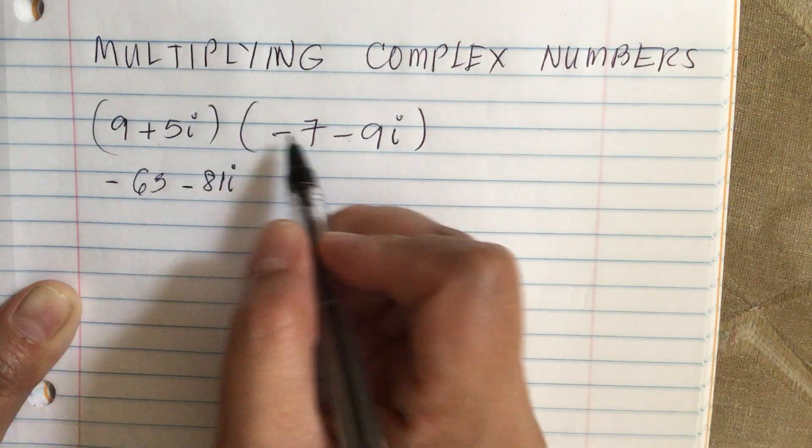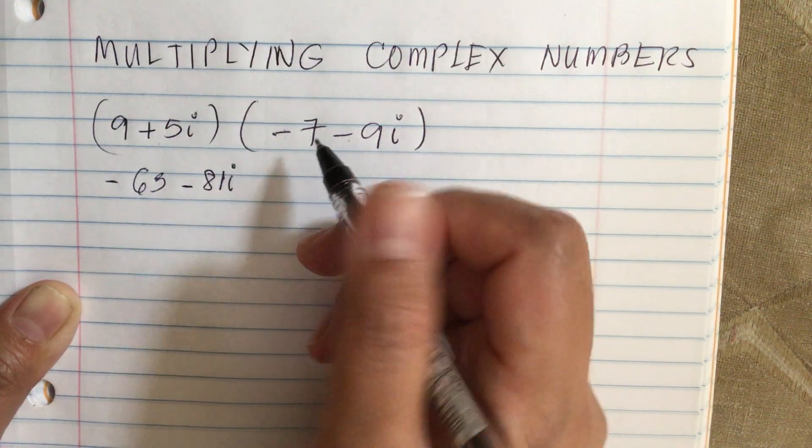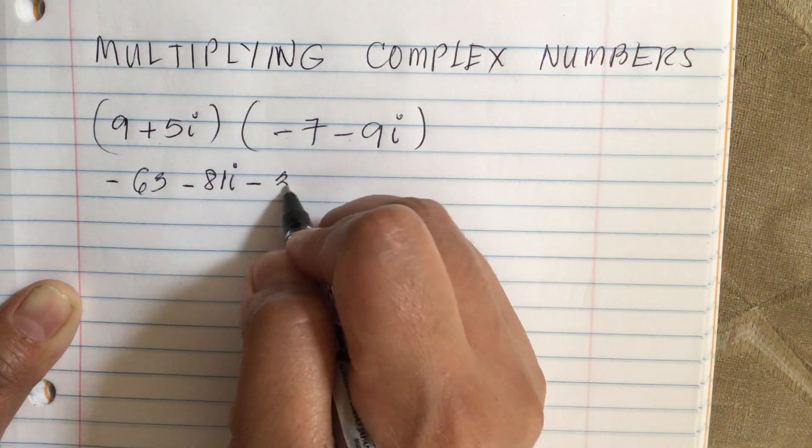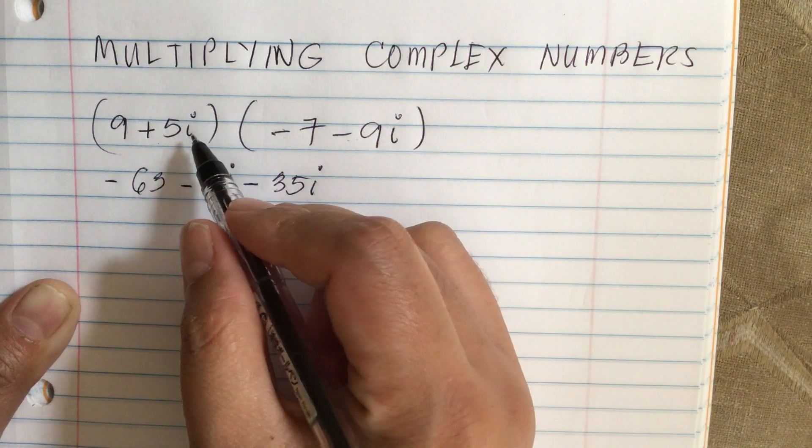And then the inside terms: we have 5i times minus 7, which is equal to minus 35i.